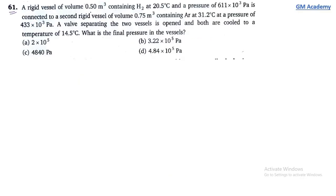A rigid vessel of volume 0.50 meter cube containing hydrogen at 20.5 degree centigrade and a pressure of 611 × 10³ Pascal is connected to a second rigid vessel of volume containing argon at a certain temperature and pressure. A valve separating the two vessels is opened and both are cooled to 14.5 degree centigrade. What is the final pressure in the vessel?